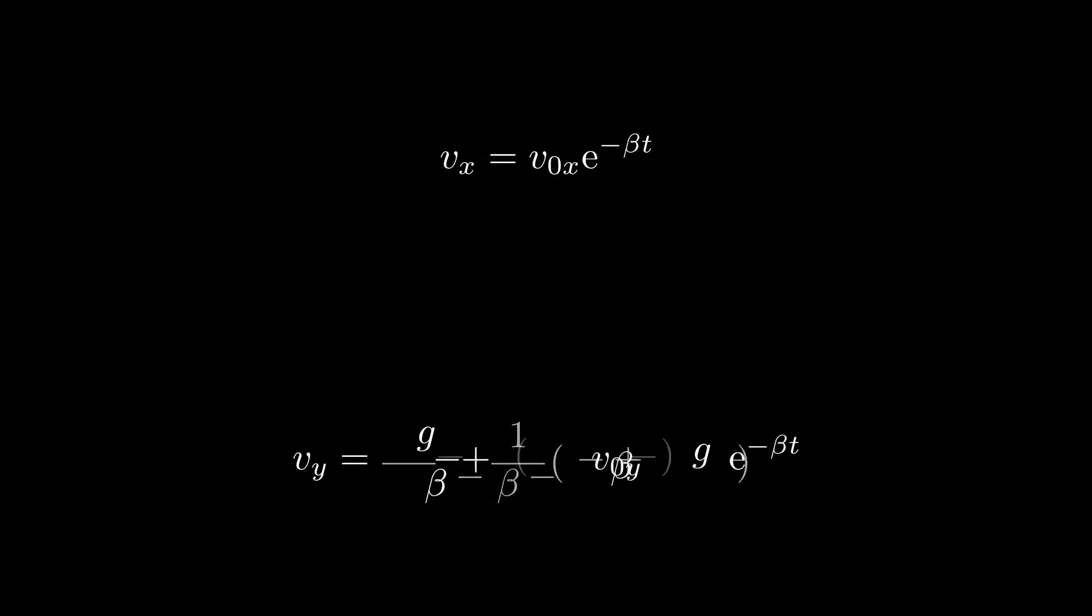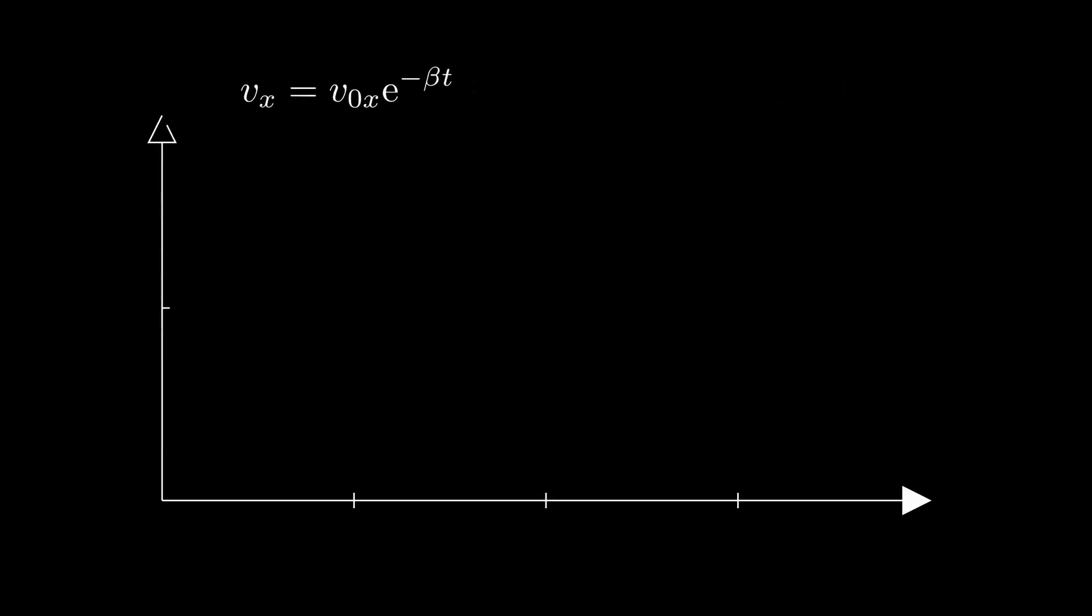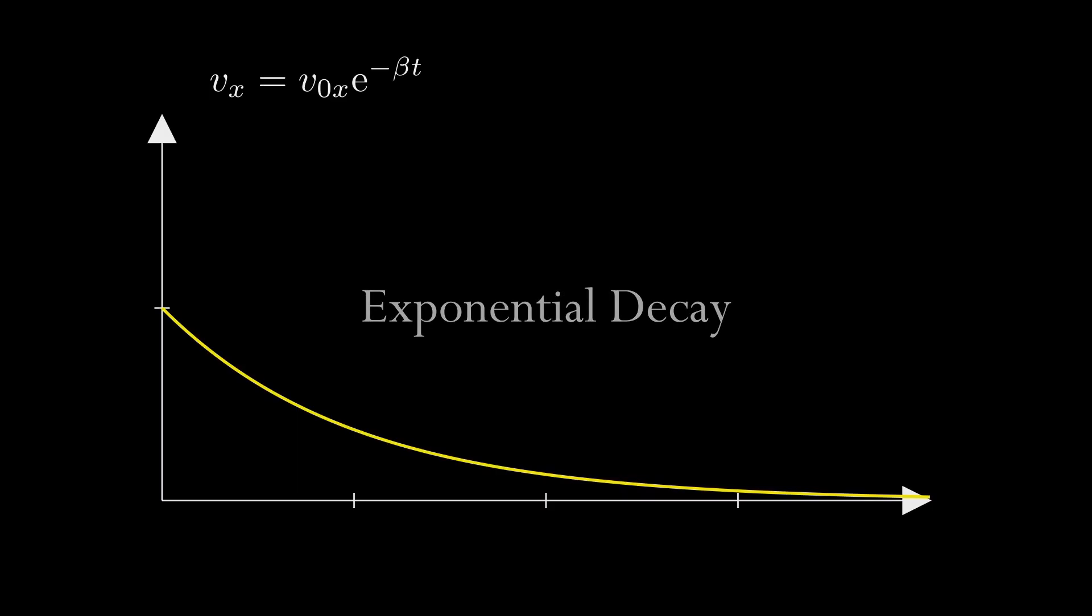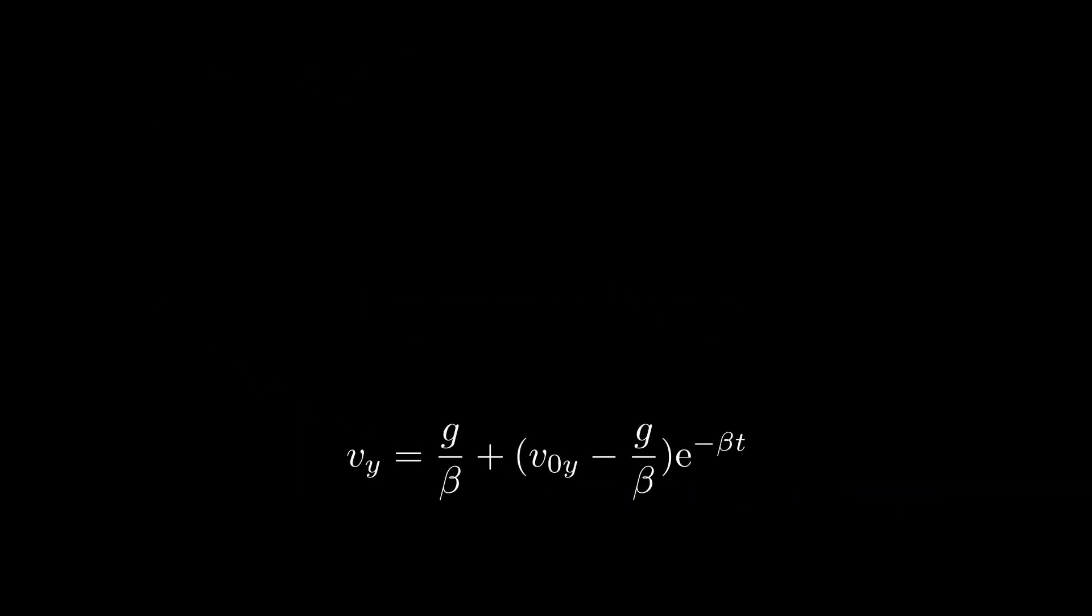Ultimately, what we end up with are these two equations. Let's look at them and see what they mean physically. For the horizontal velocity, at the beginning, t is 0, and so the value of the exponential term is 1. This checks out: the velocity at time 0 is the initial velocity. On the other hand, as time goes on, the exponential term gets smaller and smaller, tending towards 0, meaning that the velocity of the horizontal axis approaches 0 as time goes on. This trend of decay is known as the exponential decay.